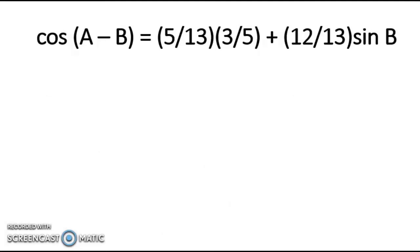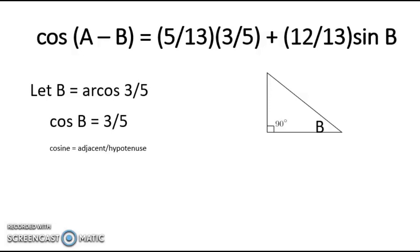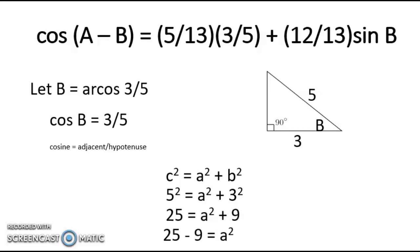Now let's do the same thing for sine B. We let B equal arccosine 3 over 5, and cosine B is equal to 3 over 5. We know that cosine is equal to adjacent over hypotenuse. So if we illustrate this using a right triangle with angle B, our adjacent side is 3 and our hypotenuse is 5. We are going to solve the opposite side using the Pythagorean theorem: 5 squared equals A squared plus 3 squared. 5 squared is 25 and 3 squared is 9. So A squared is equal to 25 minus 9, and that is 16.